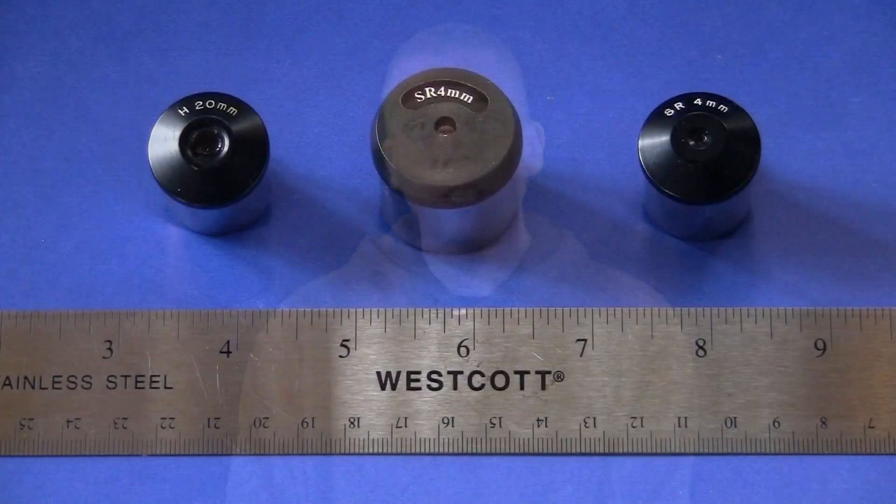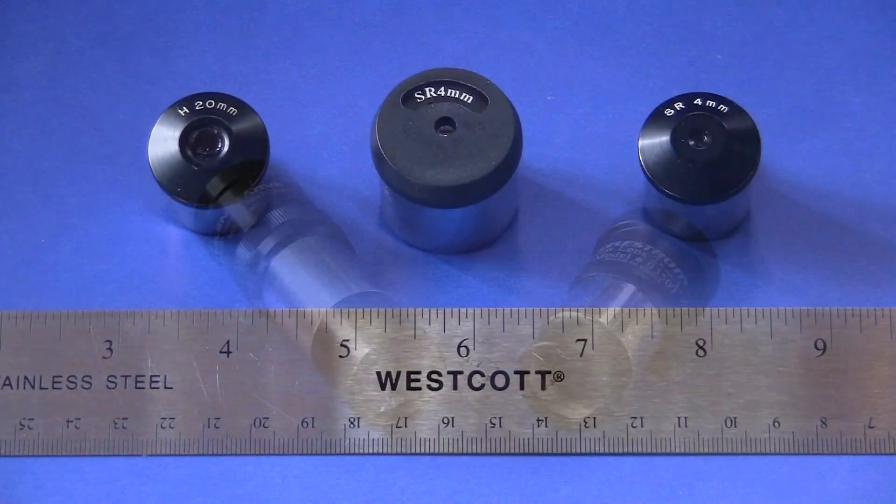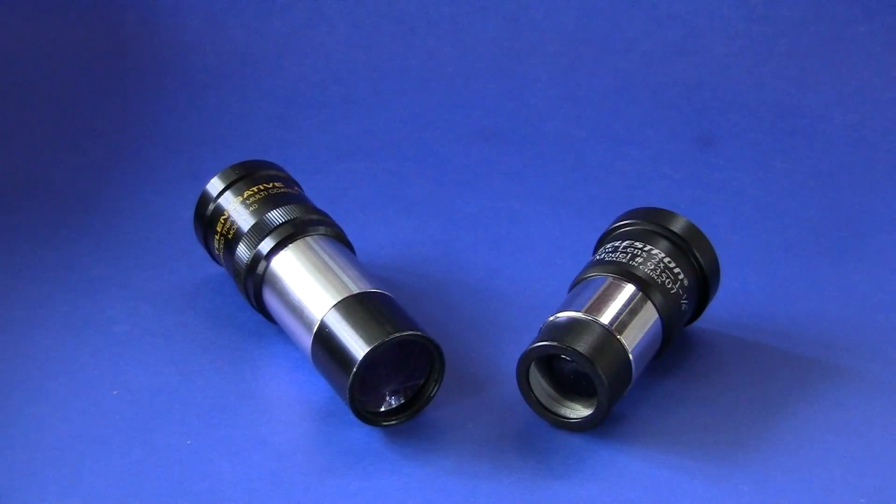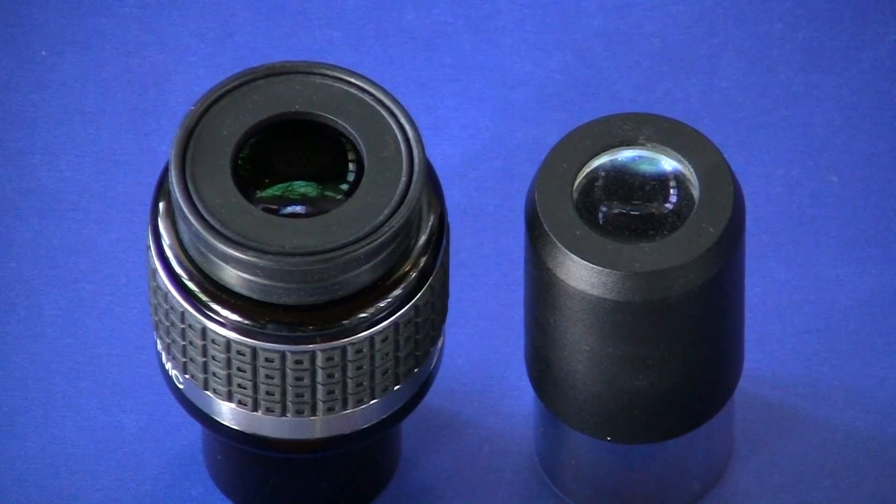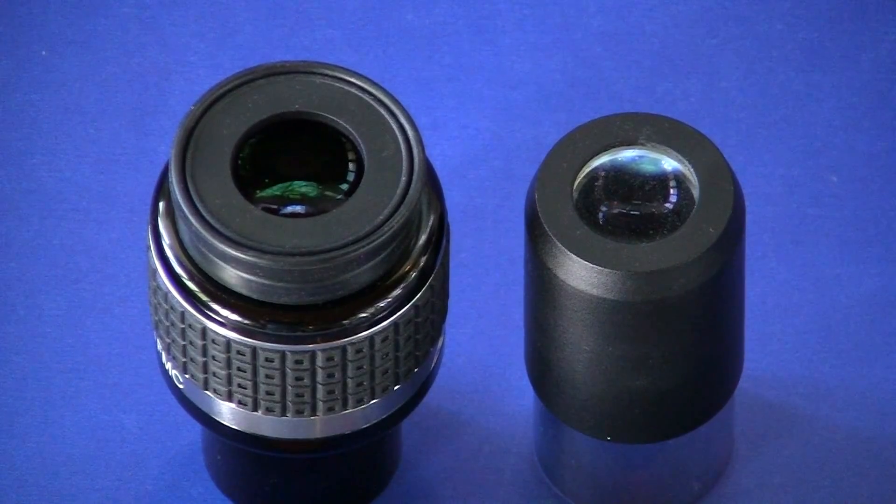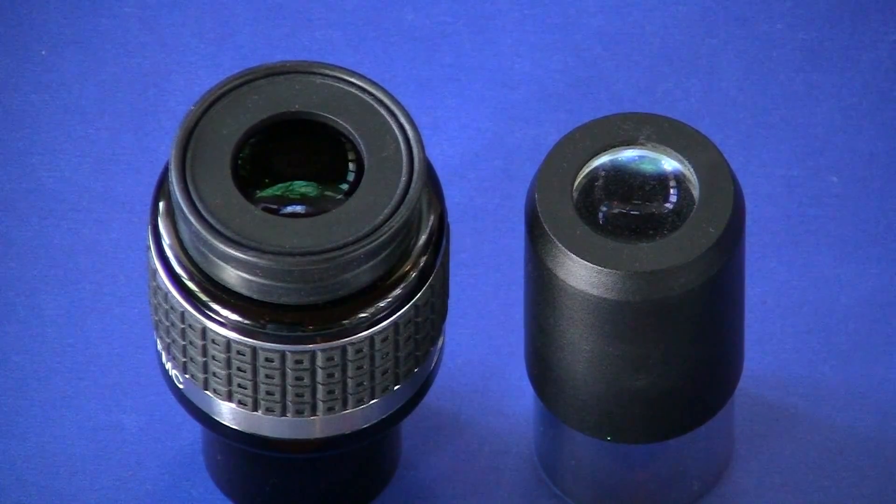Of course, we can get more magnification with shorter eyepiece focal lengths, or by using Barlow lenses, and wider fields of view using other types of eyepieces, but see videos 3 and 5 for more information on those topics. So that is a quick look at magnification and focal ratios. Now let's look at some other aspects of telescopes. In part 3 of this series, I'll talk about various types of eyepieces.